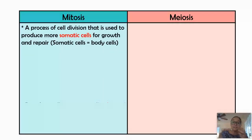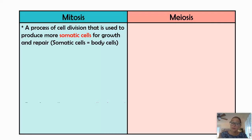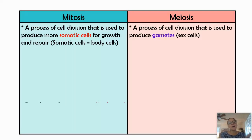Mitosis is a process of division used to produce more somatic cells, or body cells, and it's primarily used for growth and reproduction. So once a sperm fertilizes an egg, you are made of trillions of cells — all of those cells were produced by mitosis. Whereas meiosis is producing gametes, or sex cells, and meiosis only happens in reproductive organs like testicles or ovaries.